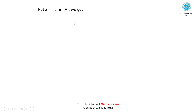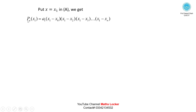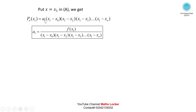Again putting x = x1 in equation A: the term with A0 becomes 0 since (x1-x1)=0. All other terms except A1 also become 0. We get Pn(x1) = A1(x1-x0)(x1-x2)(x1-x3)...(x1-xn). Solving: A1 = f(x1) / [(x1-x0)(x1-x2)(x1-x3)...(x1-xn)].